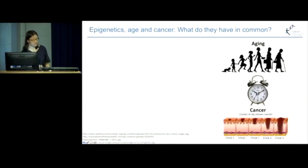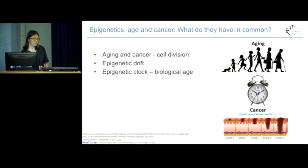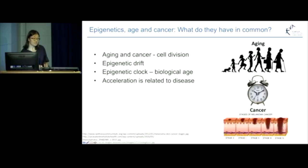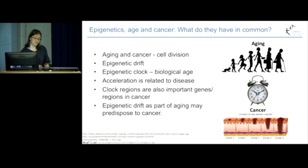To summarize — epigenetics, age, and cancer: what do they have in common? Aging and cancer share the process of cell division. As part of cell division there's DNA replication, and DNA replication can cause errors in copying of epigenetic marks, which we call epigenetic drift. Epigenetic drift in certain regions of the genome changes at a rate linear to chronological aging, which we call the epigenetic clock or biological age. That clock can accelerate or decelerate based on a number of factors, but acceleration is often related to disease. These clock regions are also found to be important genes altered in cancer. And finally, this leads us to an accumulation model where epigenetic drift, as part of aging, may predispose to cancer.